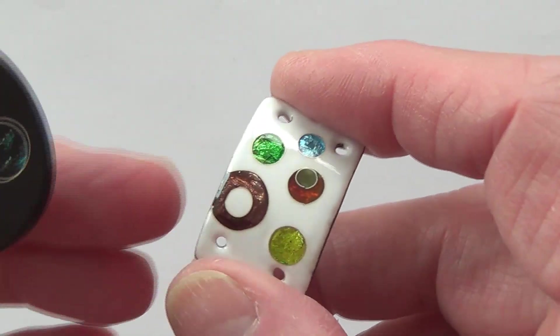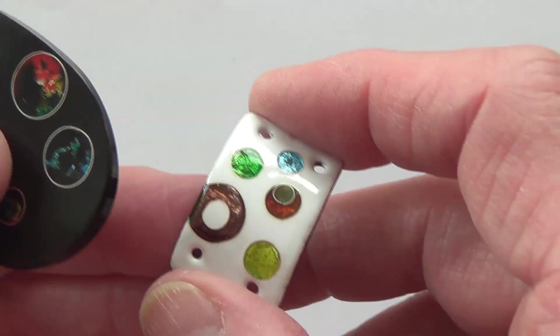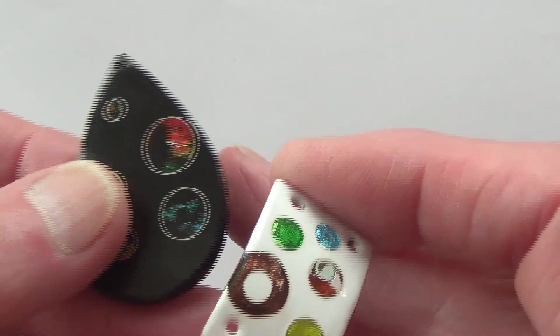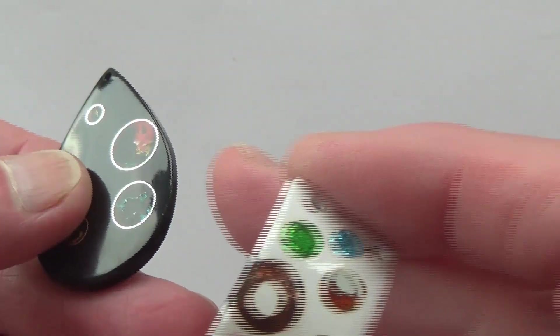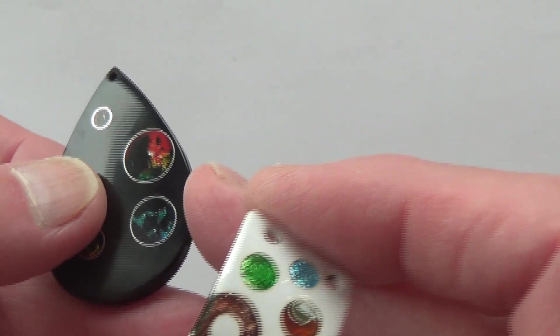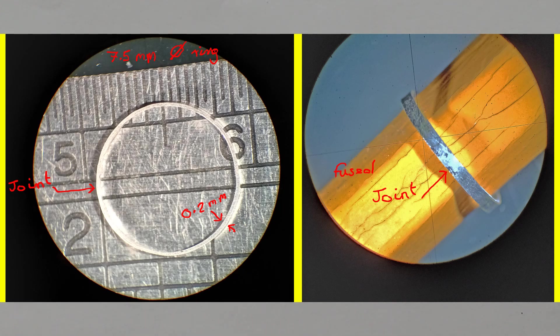This is a bangle that's vitreous enamel and this is two-part epoxy resin. I only just started looking at this epoxy resin but anyway what I do is I want to make perfect circles.